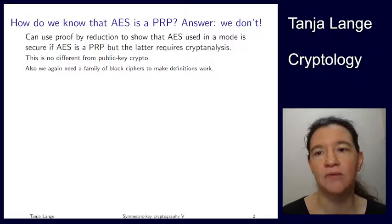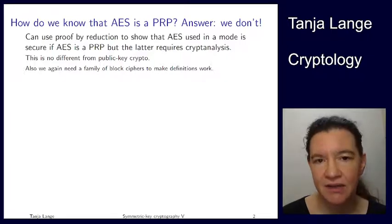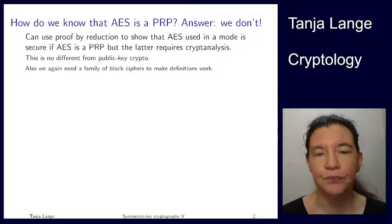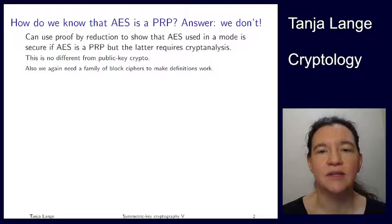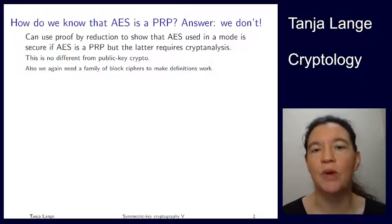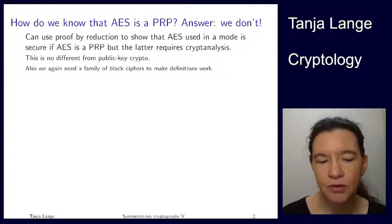This is no different from public key cryptography. We have seen generic attacks so far in elliptic curves that work for any group, but you also need to look at whether there is anything specific for elliptic curves that makes it weaker. And of course, to make the theoreticians happy, we also need to use families of block ciphers.